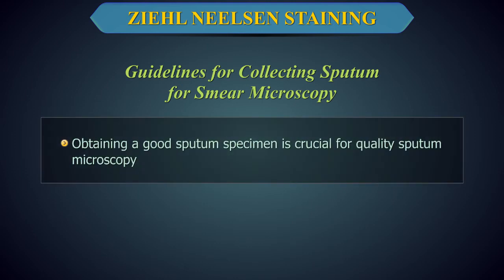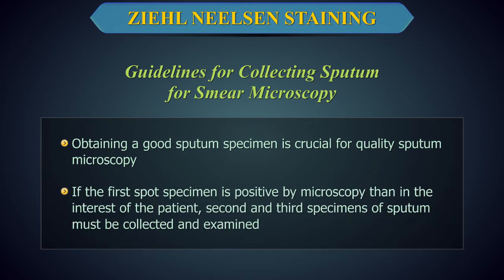Obtaining a good sputum specimen is crucial for quality sputum microscopy. If the first spot specimen is positive by microscopy and the patient does not return for the second sputum test, an immediate search must be made to find the patient to prevent dissemination of infection in the community. In the interest of the patient, second and third specimens of sputum must be collected and examined. To facilitate this, it is important to note down the complete address of all symptomatic patients.